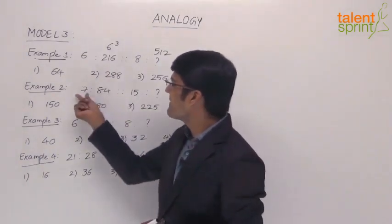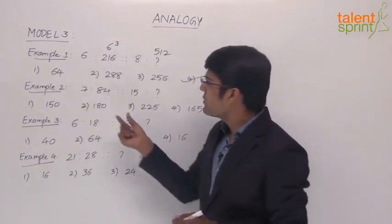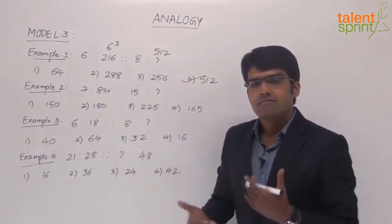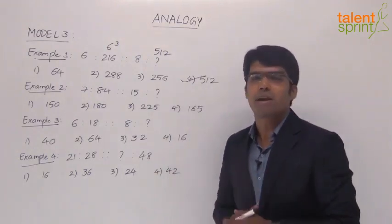Let's look at some more examples. The second example says 7 is to 84, then 15 is to what? Now let's look at what could be the relationship between 7 and 84. 7 will give 84 in what way?